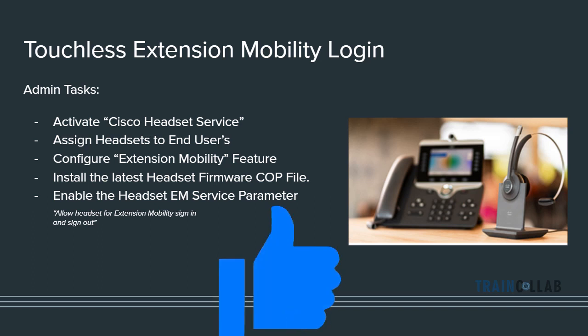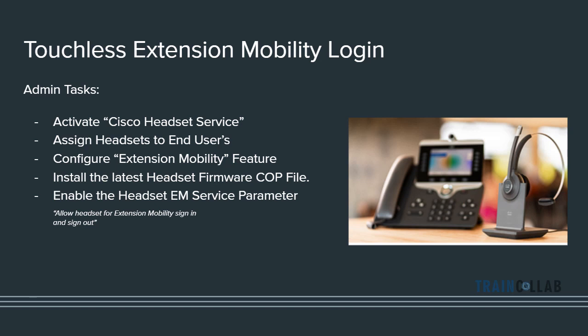There are five admin tasks that need to be done before the user starts using the headset for extension mobility login and logout. First, activate the Cisco Headset Service under service activation. Second, assign the headset to the end user. Third, have the extension mobility feature configured in your CUCM infrastructure. Fourth, install the latest COP file to get the headset firmware. Fifth, enable the headset extension mobility service parameter to allow sign in and sign out.